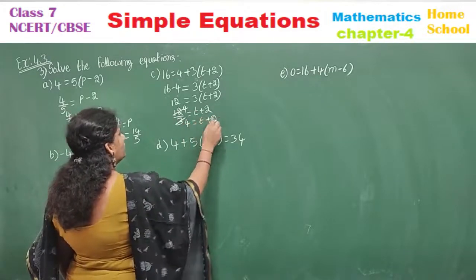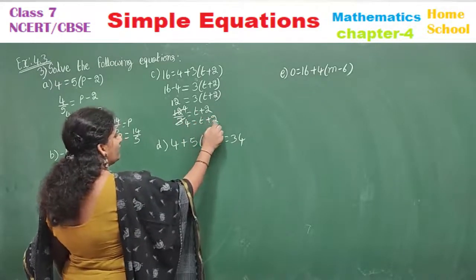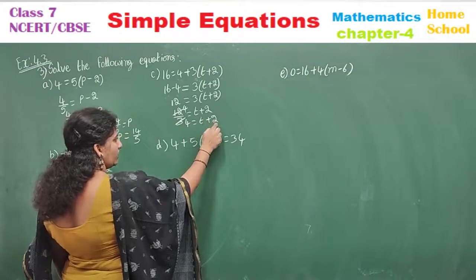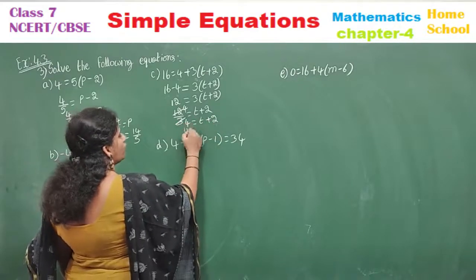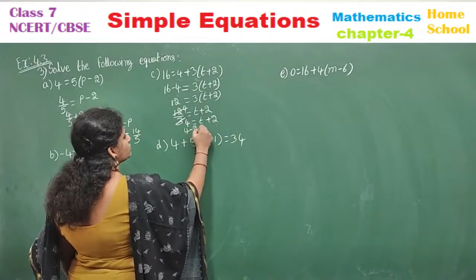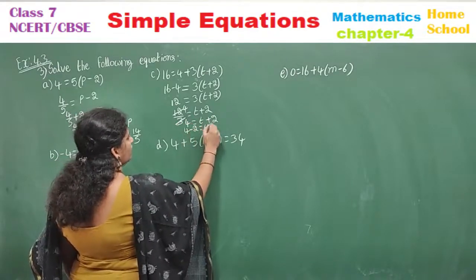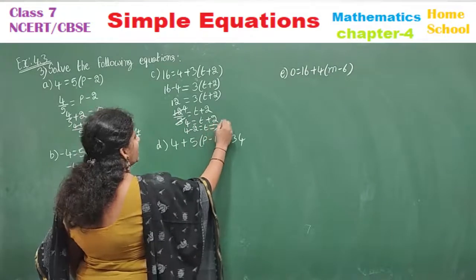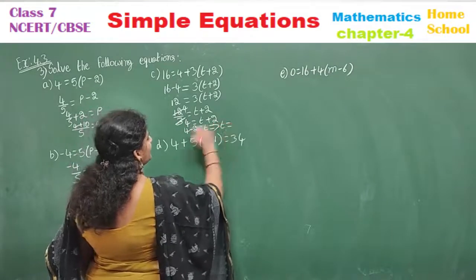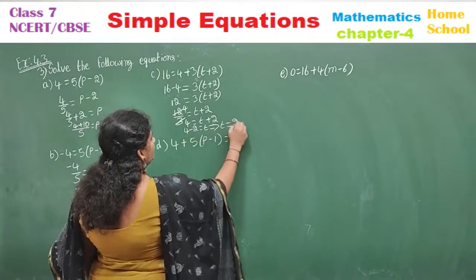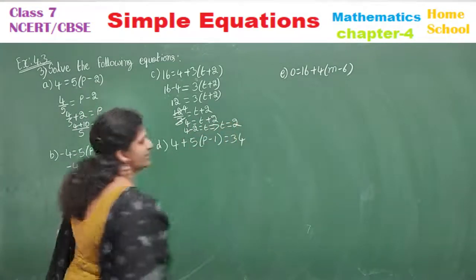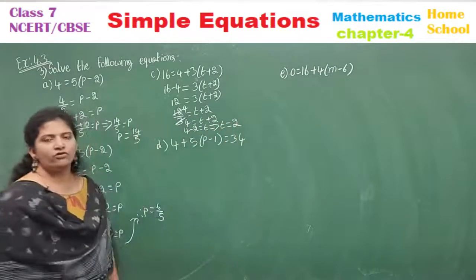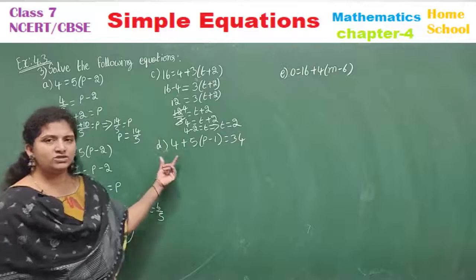Minus 2 is extra — send it to the other side. 4 minus 2 equals t. Therefore t is equal to 2.